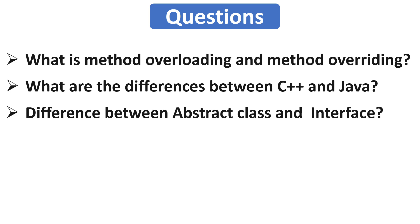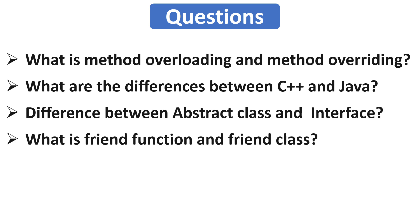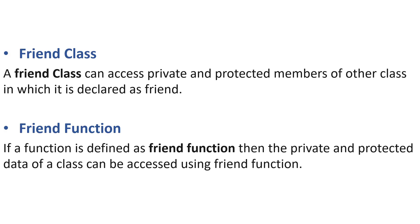Our next question is: what is a friend function and friend class? If you are from a C++ background the interviewer may ask you this. A friend class can access the private and protected members of another class in which it is declared as friend. This is useful when you want to allow a specific class to access private members of another class. Similarly, if a function is defined as a friend function, the protected and private data of a class can be accessed using that function. We use the friend keyword to create both a friend class and a friend function.